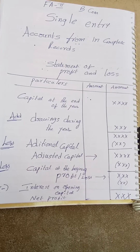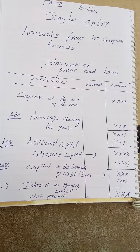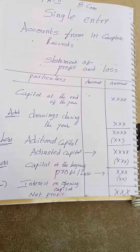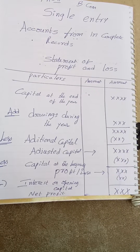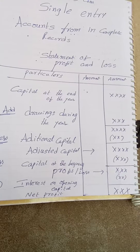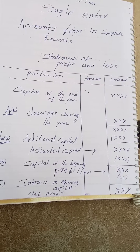Under this method, we calculate profit by making a simple statement of profit and loss. This is not an account, this is a statement. Here you have to write capital at the end of the year, add drawings during the year. If it is given per month, you have to multiply with 12, less additional capital.